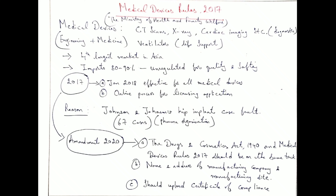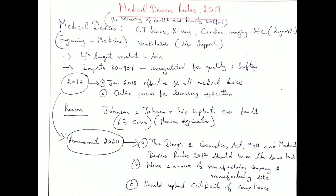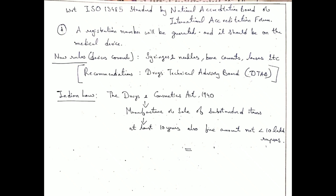Key provisions include: the name and address of the manufacturing company and manufacturing site. Devices must also be identified by name. A Certificate of Compliance is required — for example, ISO 13485 certification from the National Accreditation Board or International Accreditation Forum. A registration IP number is also generated.